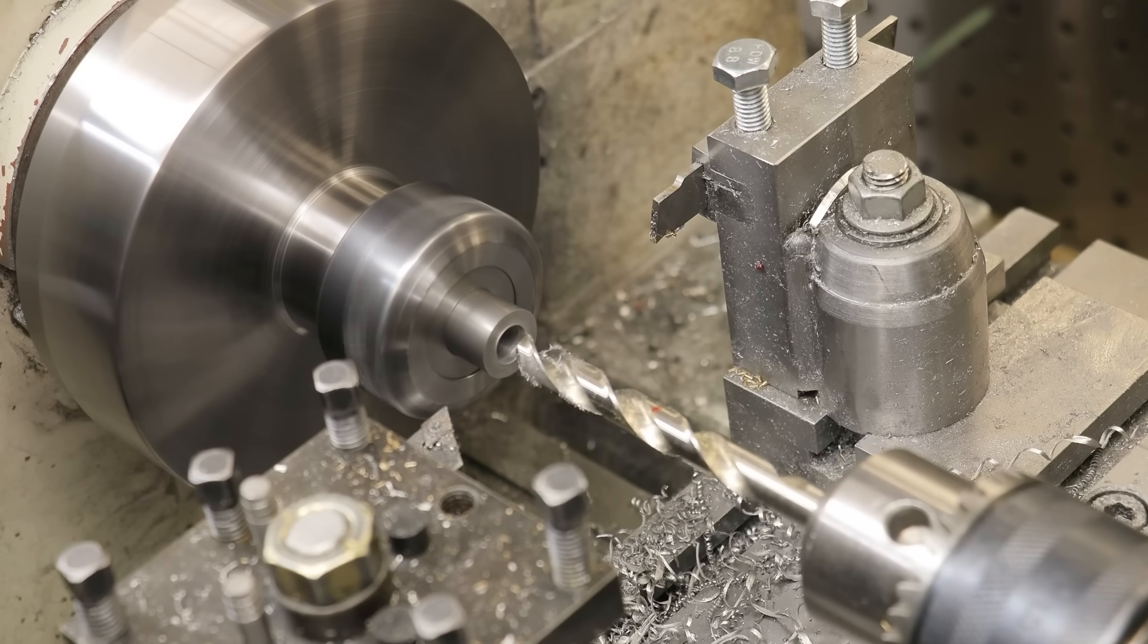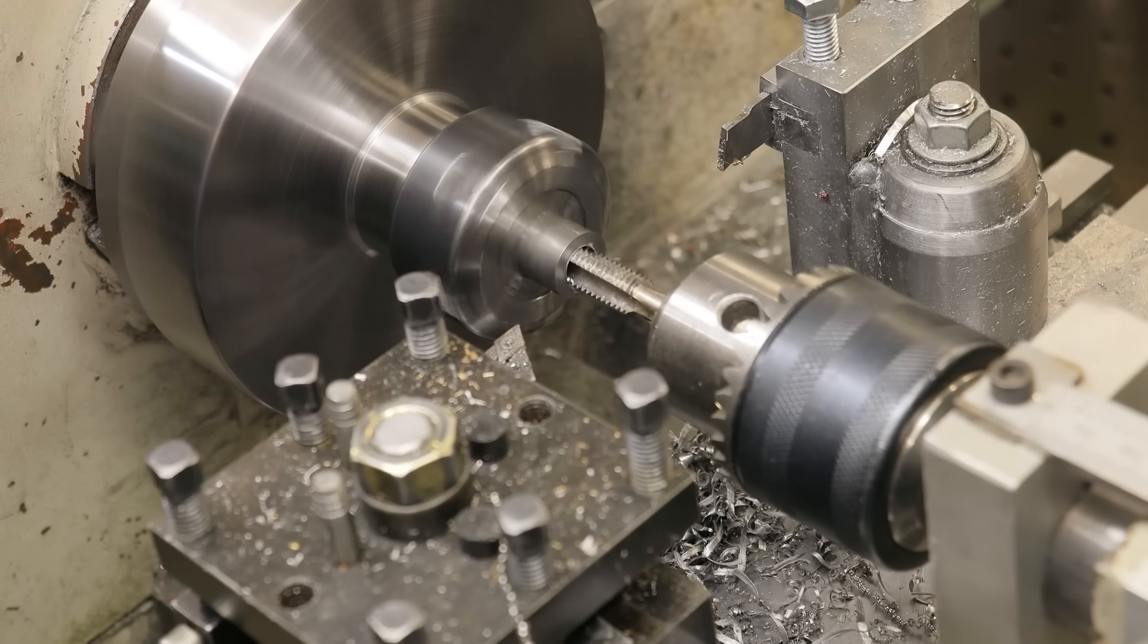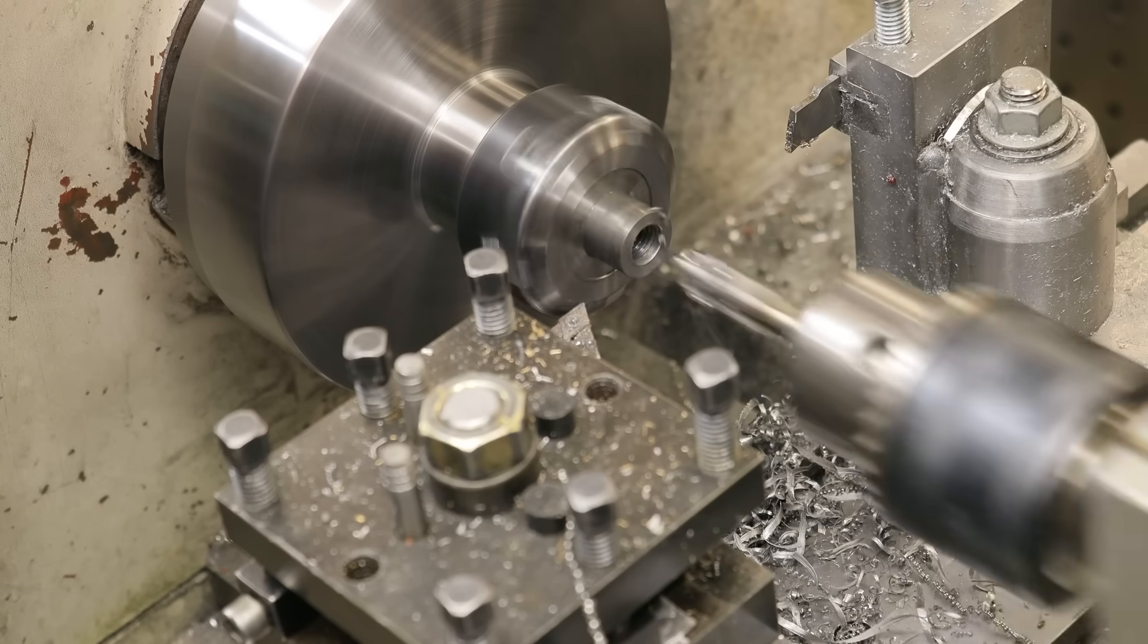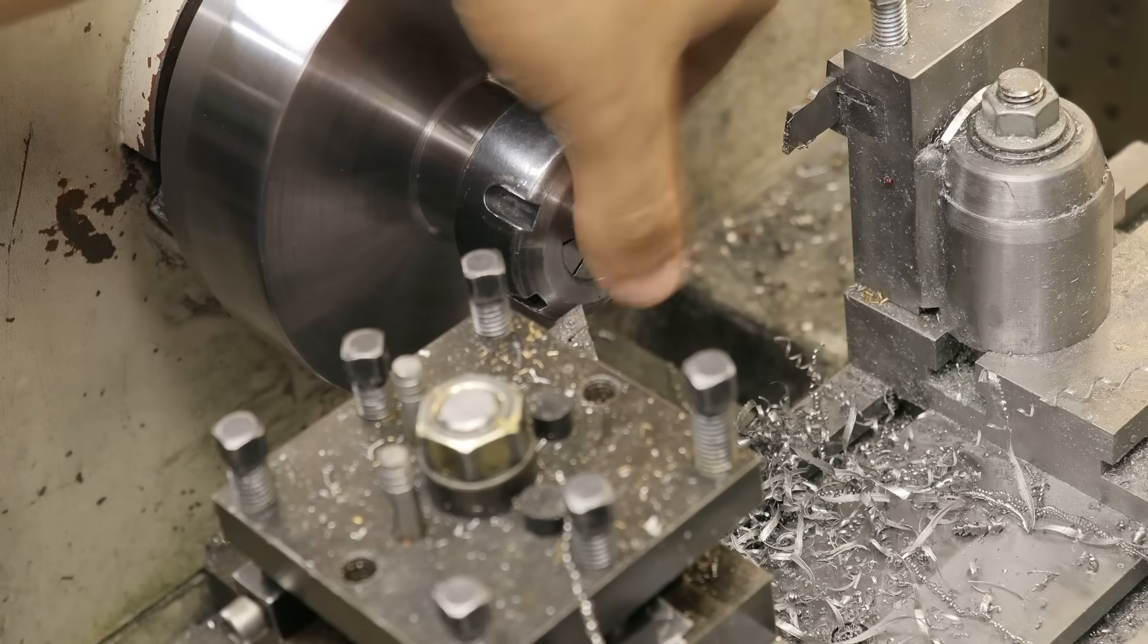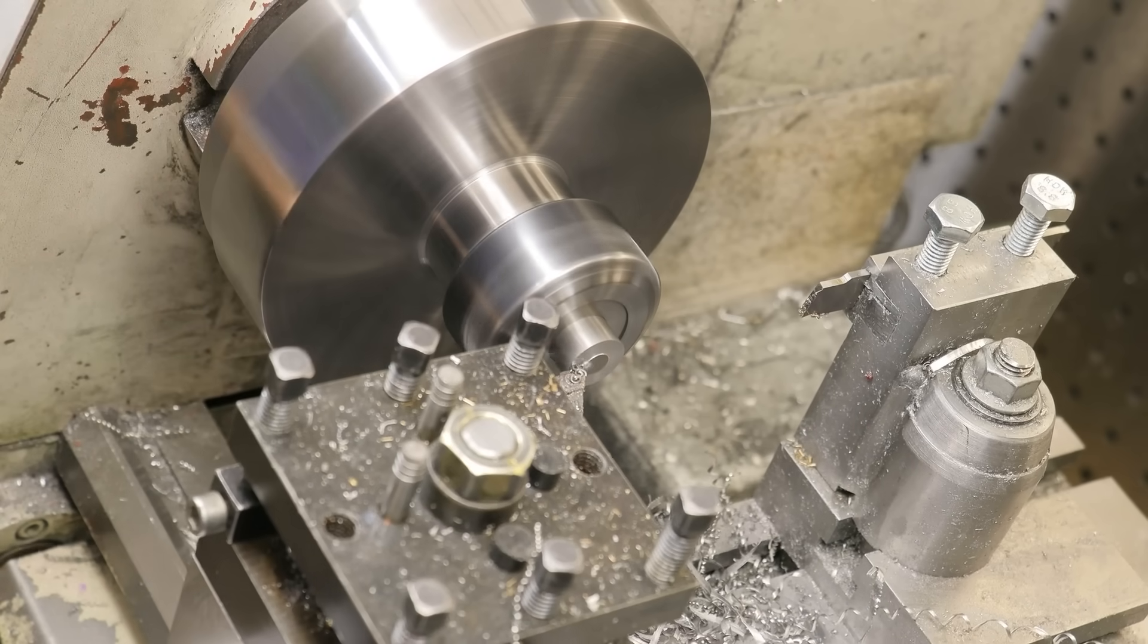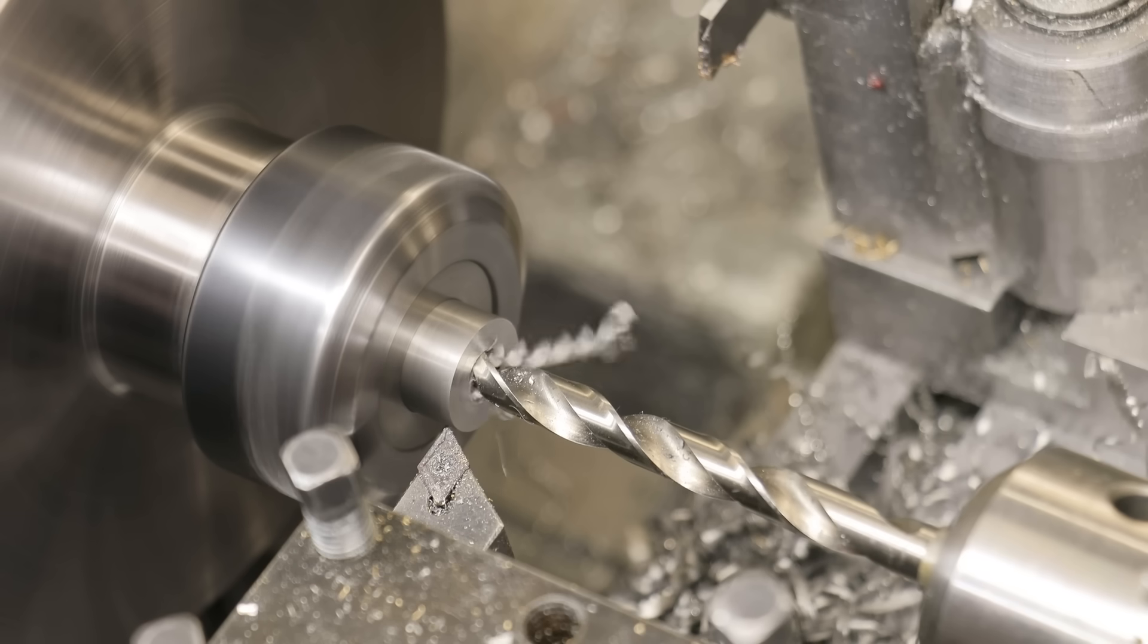And with the hole now drilled, I'll then tap the end for M10. This will be for the retaining screw. I'll then go ahead and flip it, and then I'll drill a hole just under 8mm. In this instance, 1964th of an inch.